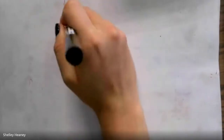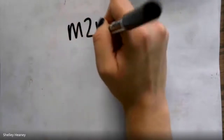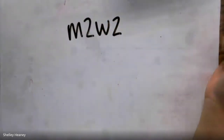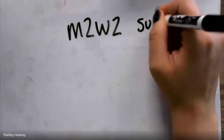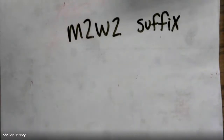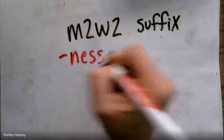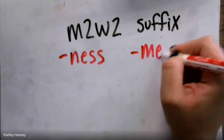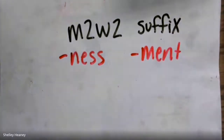Hi everybody! Today we are going to work on our Module 2, Week 2 skill, and we are going to be working with a suffix. Remember that a suffix is a part of a word that is put on the end to change the meaning. We are going to talk about two suffixes: the suffix -ness and the suffix -ment. The suffix -ness means kind of like a quality and a state.